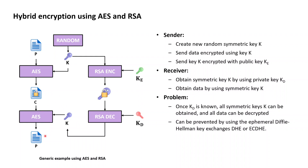This hybrid encryption approach combines the best of both worlds insofar as only one key per participant is required to begin with. Furthermore, the bulk of the data — the plaintext, which can be of arbitrary size — is encrypted with AES, which RSA by itself would not be capable of, or at most would be capable of only at a very significant loss of performance.